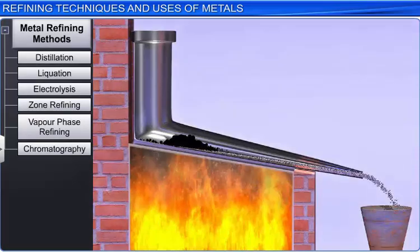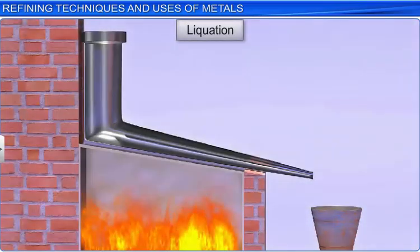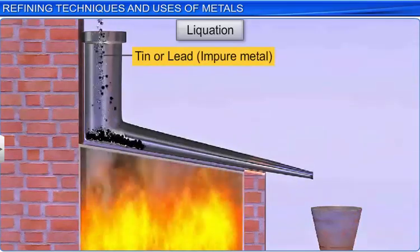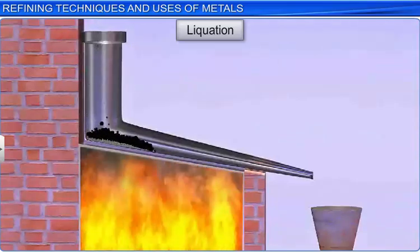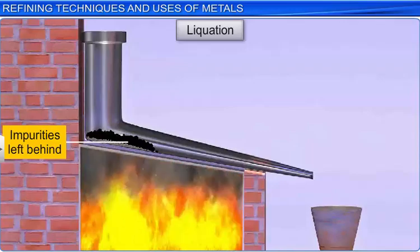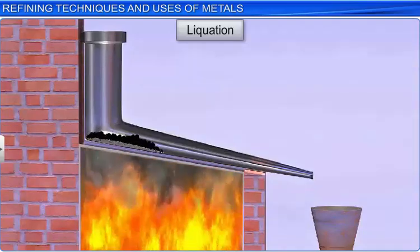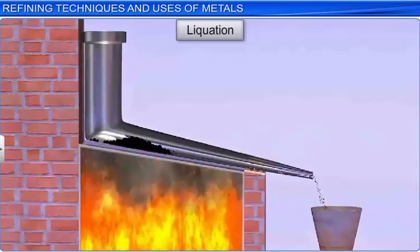Let's look at another refining method: liquation. This method is used when the impurity is less fusible than the metal itself. An impure metal with a low melting point, such as tin or lead, is heated at just enough temperature to melt it using a sloping hearth. The impurities with higher melting points do not melt and stay at the top of the sloping surface, while the molten metal flows down, thereby separating it from the impurities.